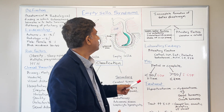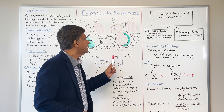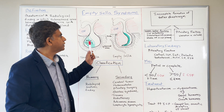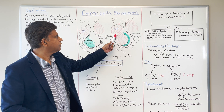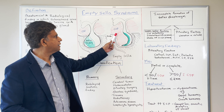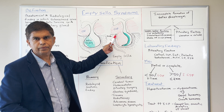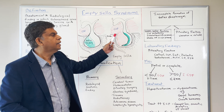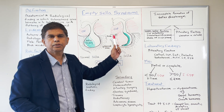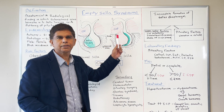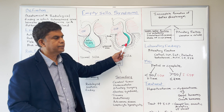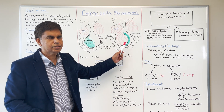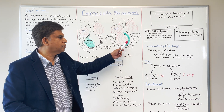Let's look at the pathophysiology one more time. We have incomplete formation of the sellar diaphragm. When you have that incomplete formation, the subarachnoid space is kind of pushed in, flattening out the pituitary gland. That's the main mechanism — that's what's happening in primary Empty Sella Syndrome.